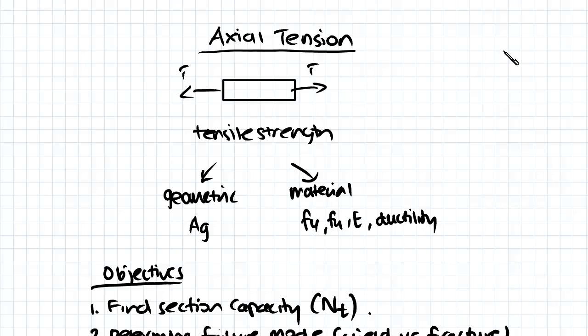Hey guys, in this video we'll be looking at axial tension. Axial tension is the first capacity that we'll be covering in Steel Structures 1. Now if you remember, tension is the pulling force that attempts to elongate a member.